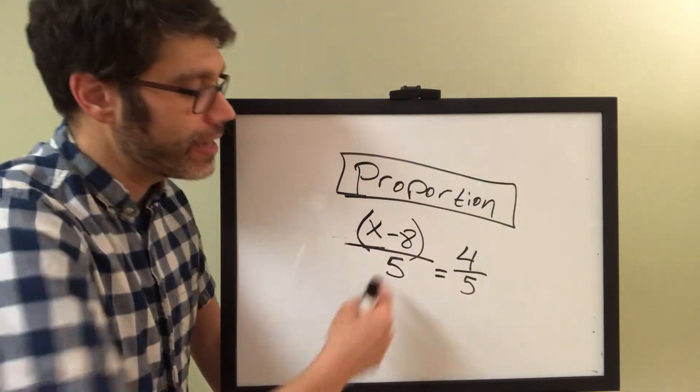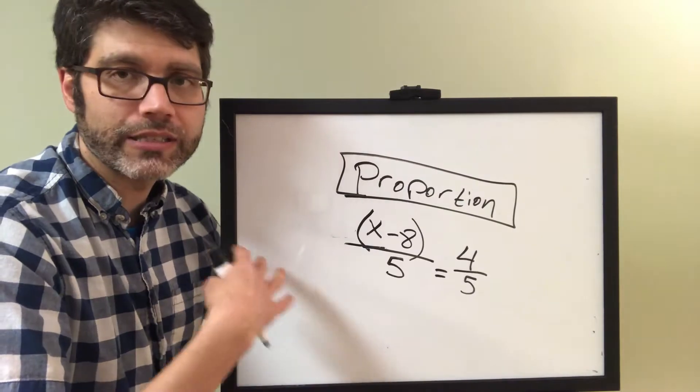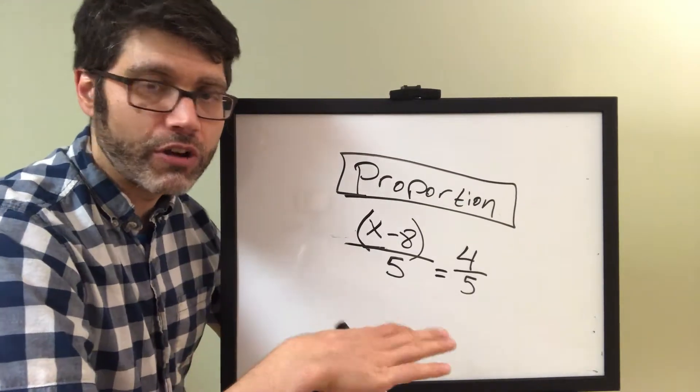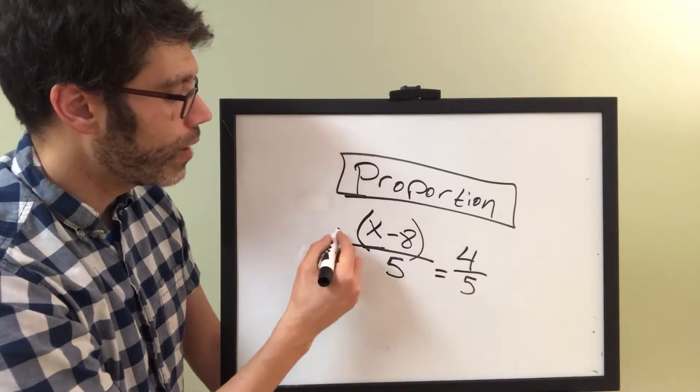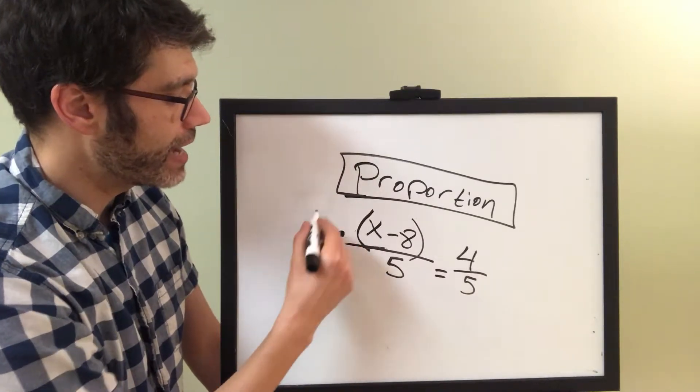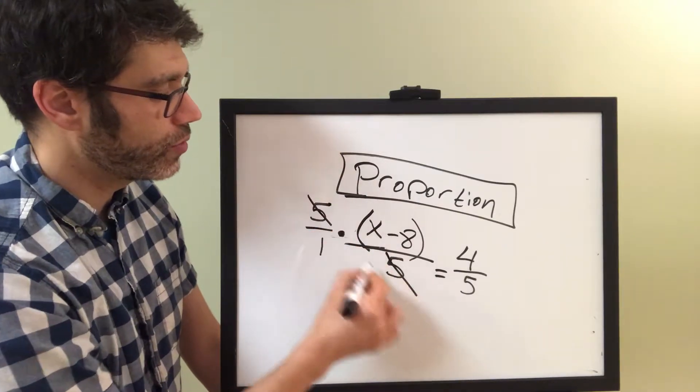So, what we can do is we can get rid of our denominators. We always want to get rid of our denominators because it's then much easier to solve for x. So, how do we get rid of our denominator on the left-hand side? Well, if we multiply it by 5 over 1, do you see that they cancel out just to 1s?